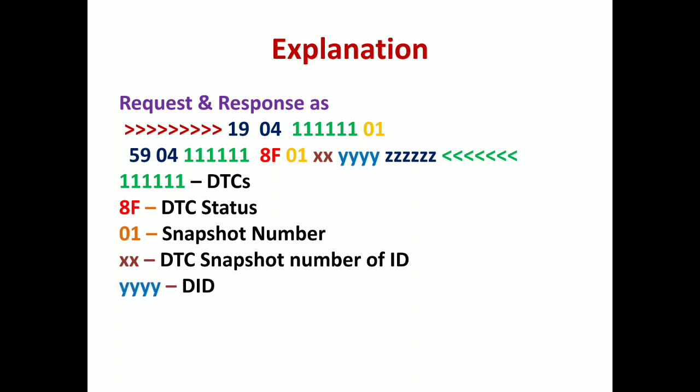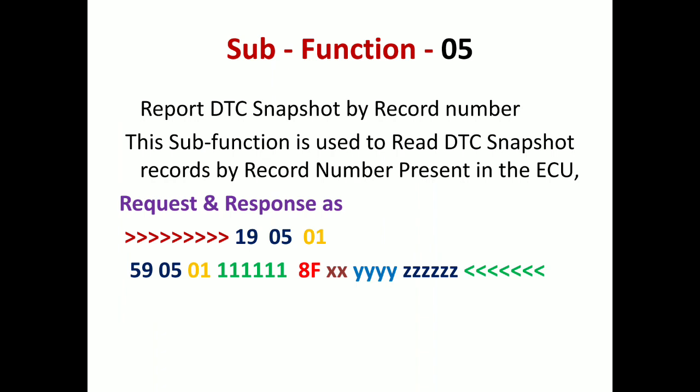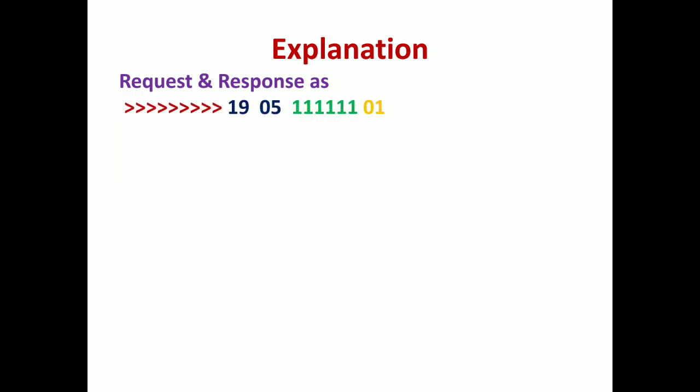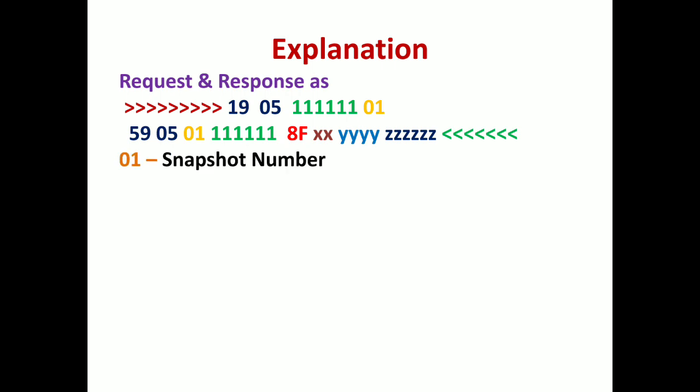Sub-function 0x05 is used to report DTC snapshot by record number. The previous sub-function used DTC and record number as inputs; in this one you only give the record number as input. This sub-function reads the DTC record by record number present in the ECU. The request is 19 05 01, where 01 is the snapshot number. The response starts with 59 05, and 01 is also the snapshot number in the response.